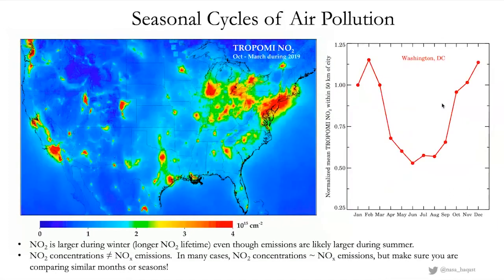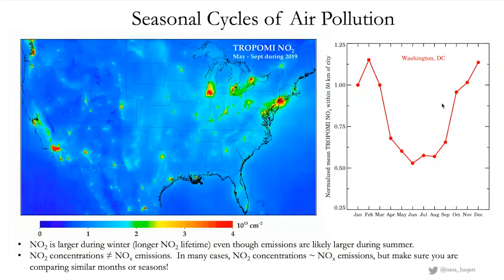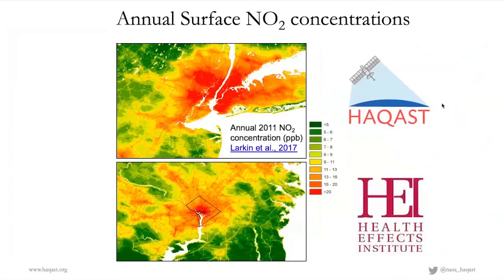Looking at seasonal cycles of air pollution, this mostly relates to the NO2 lifetime rather than emissions — an important distinction because NO2 concentrations do not always equal NOx emissions. In many cases NO2 concentrations can be analogous to NOx emissions, but you must compare similar months or seasons. Note that TROPOMI has difficulty over snow, so there are some issues in winter in northern regions like Minnesota and Canada. NO2 is clearly larger during winter due to the longer lifetime of NO2, even though emissions are likely approximately similar between seasons.